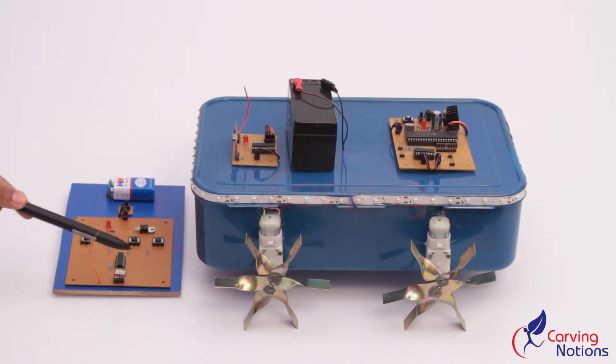This robot is controlled by an RF transmitter. This switch is to move the robot in forward direction. This switch is to move in reverse direction. You can turn the robot to the left direction with this switch. This switch is to turn right.